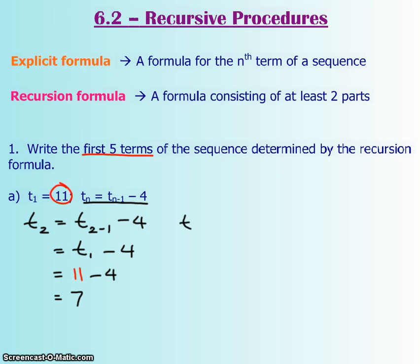Now we're going to do the same thing for your third, fourth, and fifth term. So you have t₃ minus 1, minus 4, which is t₂, and we already found t₂.